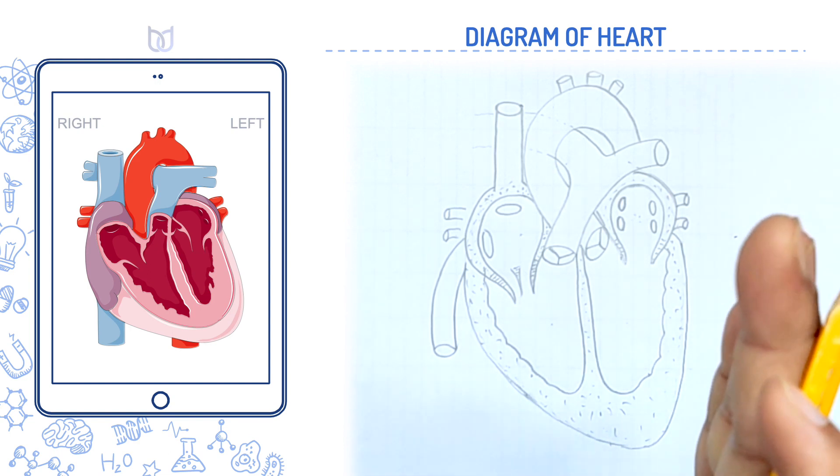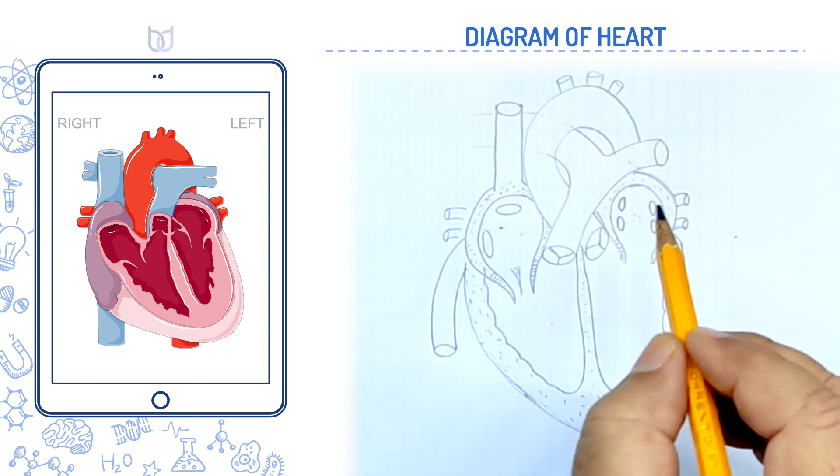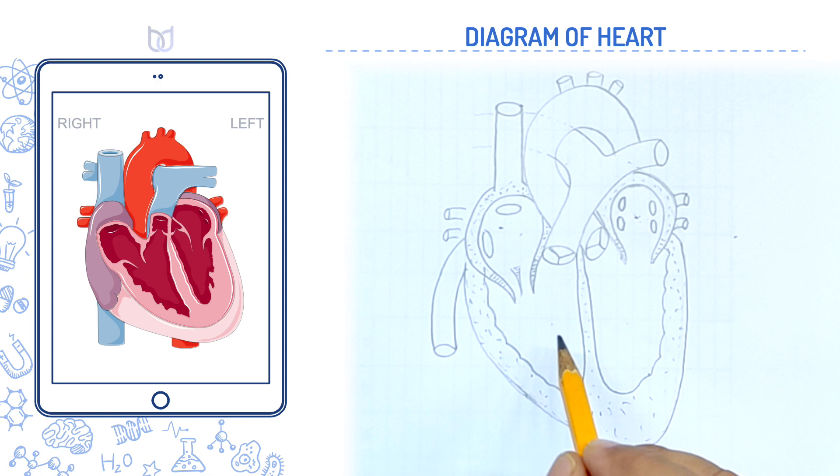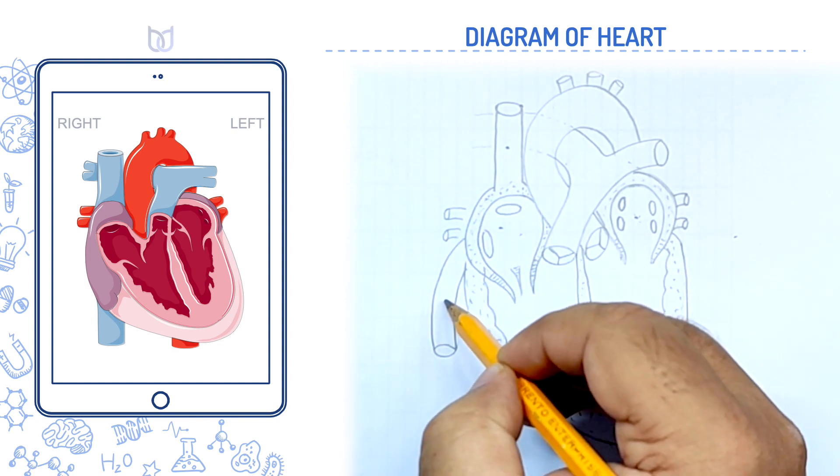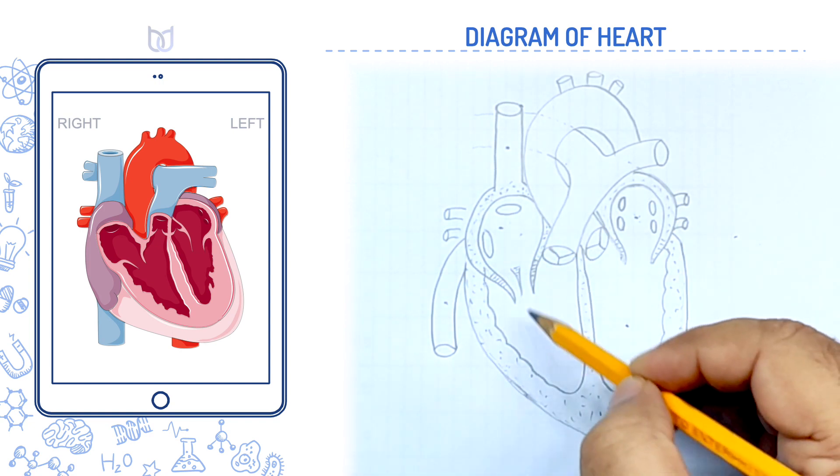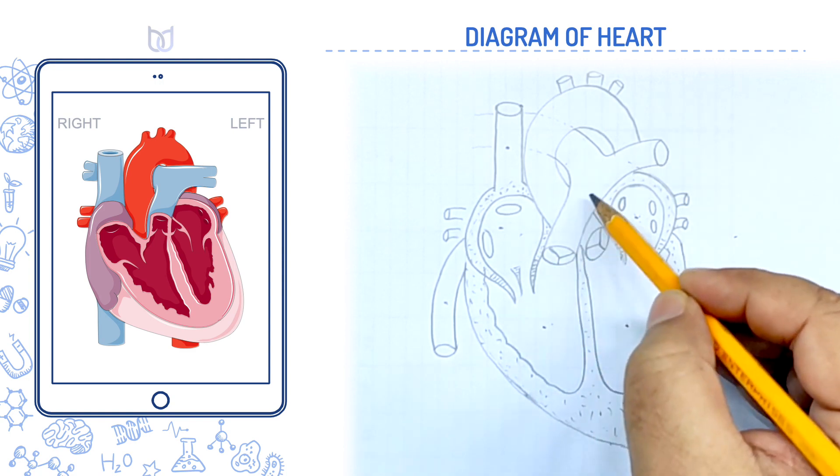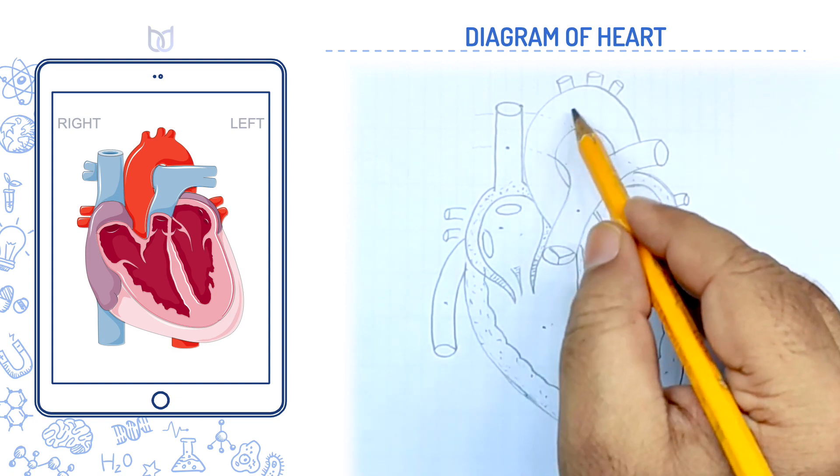Next remains, labeling. In exam, whenever you draw the diagram, you must label it and remember the names. This one right auricle, this one left auricle, here right ventricle, this one left ventricle. These two veins called superior vena cava and inferior vena cava. Arising from right ventricle is the pulmonary aorta. Arising from left ventricle is the systemic aorta.